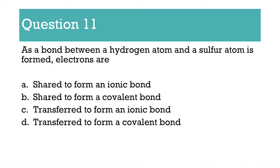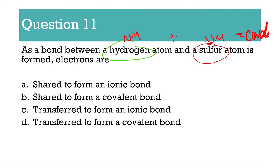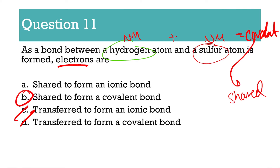Number 11: since a bond between a hydrogen atom and a sulfur atom is formed, electrons are... Hydrogen is a non-metal. Sulfur is also a non-metal. Non-metal plus non-metal equals covalent. In a covalent bond, electrons are shared — shared to form a covalent bond. Remember, ionic is a metal and a non-metal with electrons transferred. Covalent is two non-metals, electrons are shared.